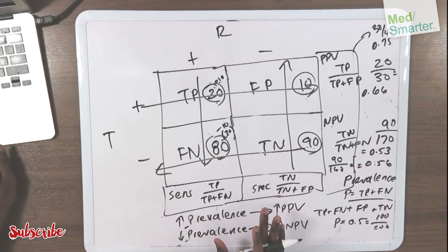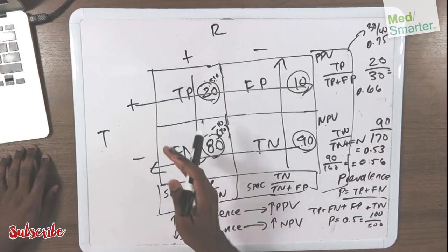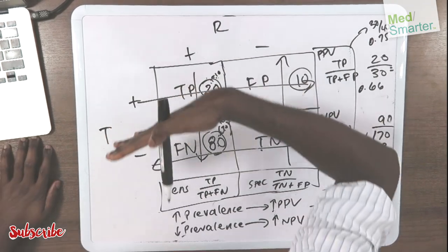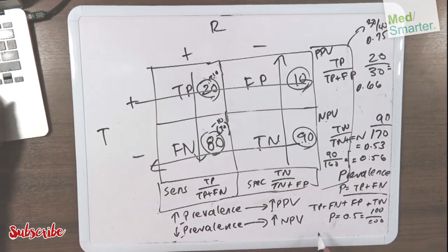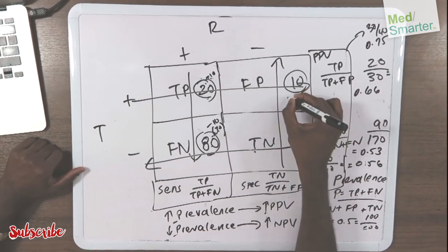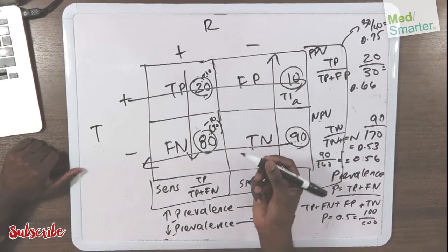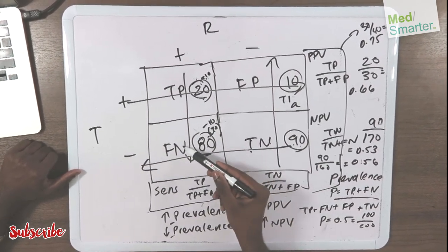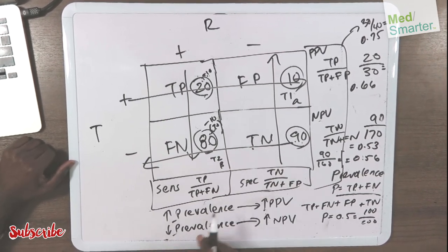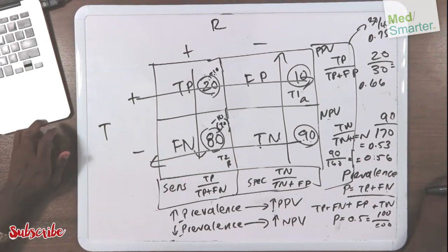That gives you the summary of what we discussed in regards to sensitivity, your specificity, your positive predictive value, your negative predictive value, your prevalence, your true positive, your false positive — which you can also call your type one error or alpha error — or down here, your type two error or beta error. We'll talk about that more in another video. And then there's your true negative. That is your summary.